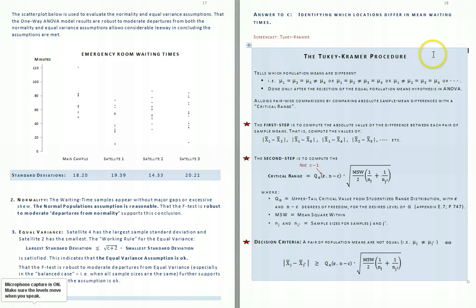This screencast involves the Tukey-Kramer procedure. The Tukey-Kramer procedure is applied only when the ANOVA hypothesis test is decided in favor of H1, that is, in favor of the hypothesis that at least two population means differ.